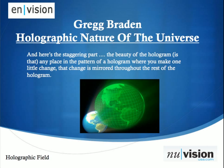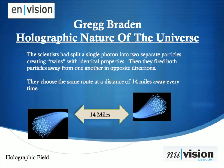This is going to be interesting when you actually see the software work. In Greg Braden's holographic nature of the universe, there was an experiment where scientists split a single photon into two separate particles, creating what they call twins with identical properties. They fired both particles away from one another in opposite directions down fiber optic cable, where the cable had many choices. What they found is that every single time, the twin would choose the same exact route — a pretty interesting discovery.